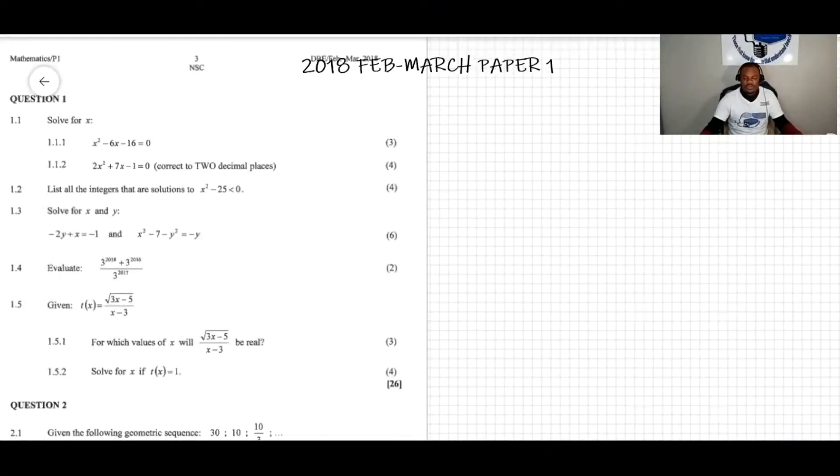In the previous video we did question 1.1 through question 1.3. Now we're going to do question 1.4. The question says 3 to the power of 2018 plus 3 to the power of 2016, all over 3 to the power of 2017.